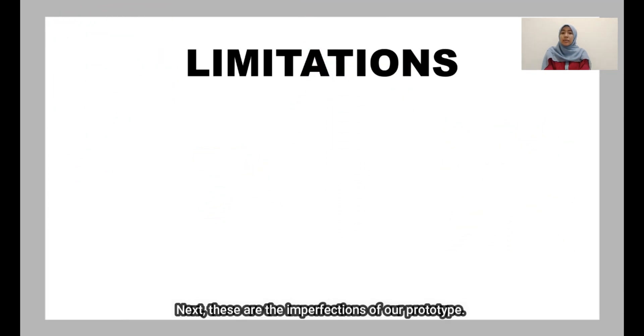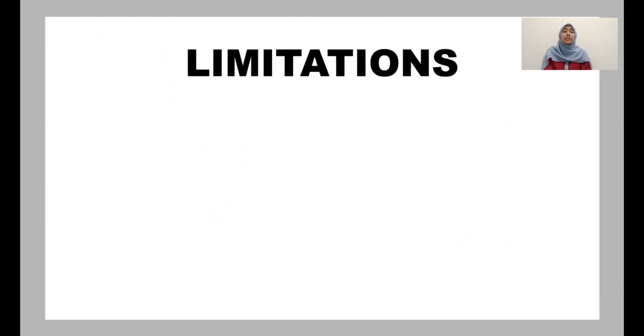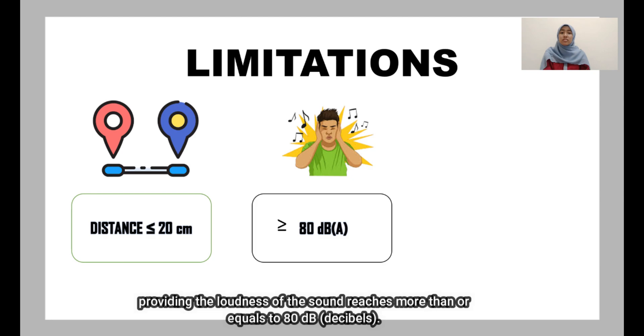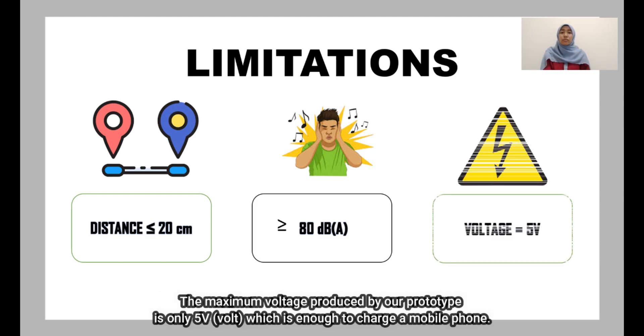Next, these are the imperfections of our prototype. The first one is that the prototype can detect the sound of 20 cm radius only, providing the loudness of the sound reaches more than or equal to 80 decibels. The maximum voltage produced by our prototype is only 5 volts, which is enough to charge a mobile phone.